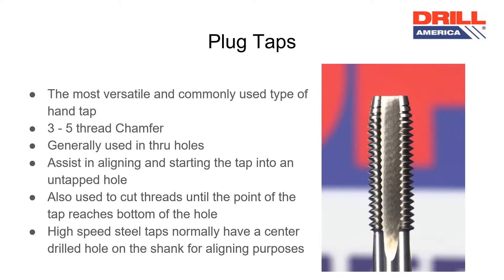Plug taps are the most versatile and commonly used type of hand tap. They have a 3 to 5 thread chamfer and are generally used in through holes. They assist in aligning and starting the tap into an untapped hole and are also used to cut threads until the point of the tap reaches the bottom of the hole.